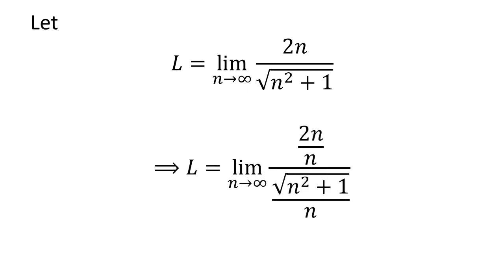Multiplying the numerator and the denominator by a common factor does not change the value of the fraction. So, let us multiply the numerator and the denominator by 1 upon n.